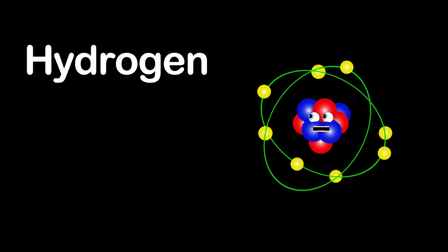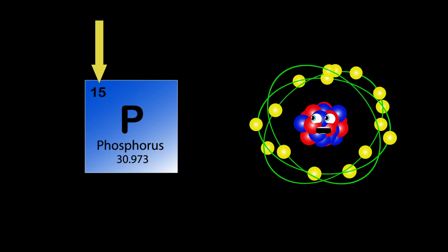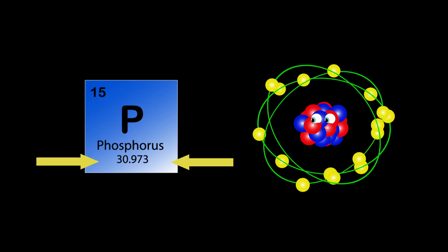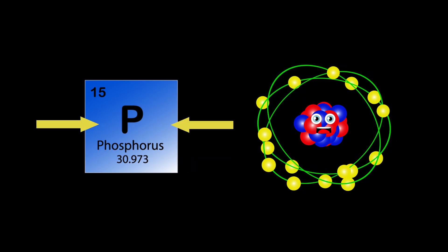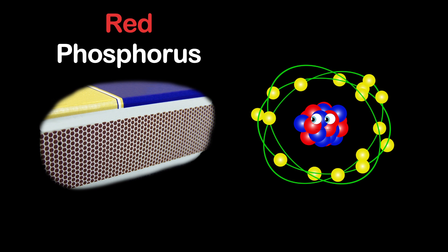I'm phosphorus. My atomic number is 15. My atomic mass is 30.973. P's my symbol as you see. I'm a vital plant nutrient. And red phosphorus is used on the side of safety matchboxes. It's what you strike the match to.